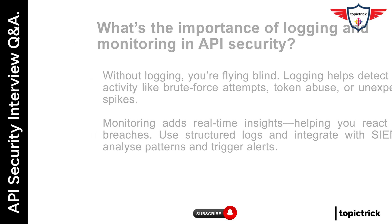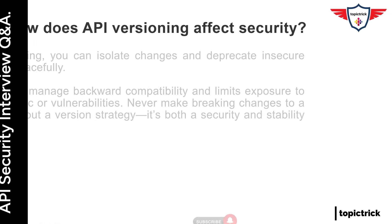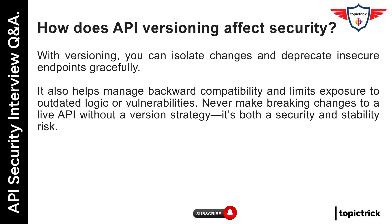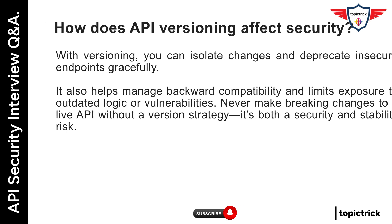How does API versioning affect security? With versioning, you can isolate changes and deprecate insecure endpoints gracefully. It also helps manage backward compatibility and limits exposure to outdated logic or vulnerabilities. Never make breaking changes to a live API without a version strategy — it's both a security and stability risk.